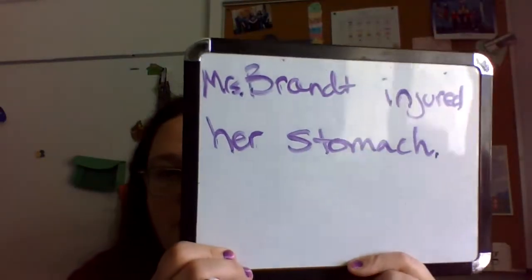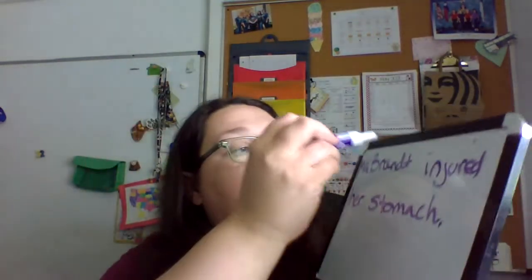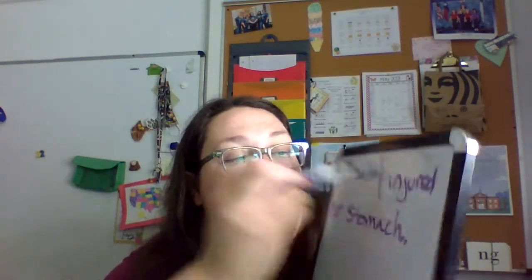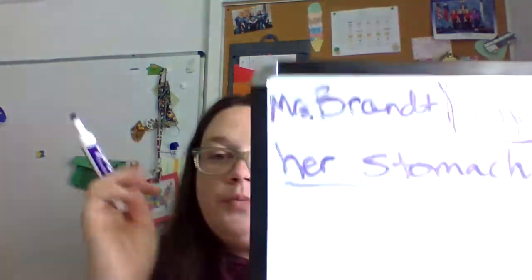So if we have Mrs. Brandt injured her stomach, then Mrs. Brandt is the subject. I'm going to write Brandt — I forgot to write Mrs. — injured her stomach. So now I have the same sentence. I rewrote it: Mrs. Brandt injured her stomach. So then what I'm going to do now is — what is the predicate? It's the action part. We're still going to draw a line right between these two, like we did last time, but this time we're going to underline the predicate, the action part.